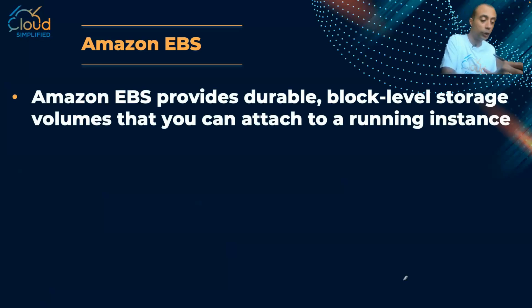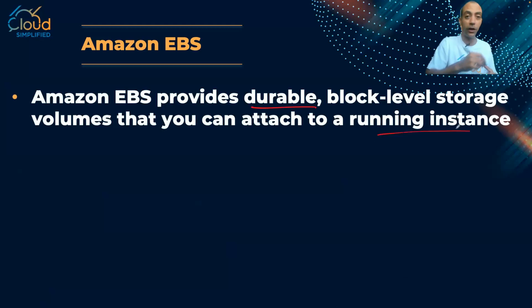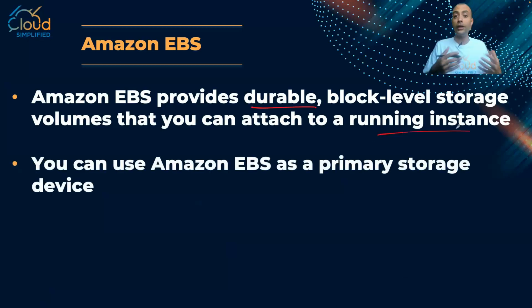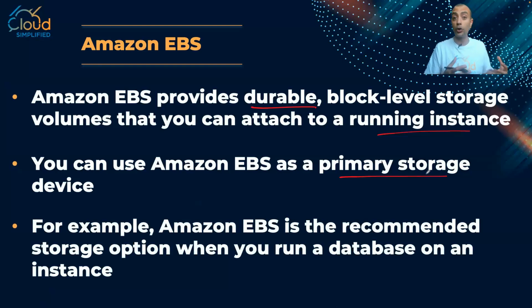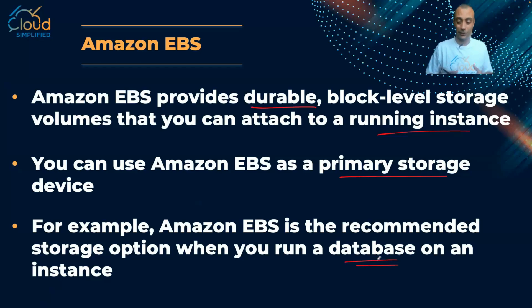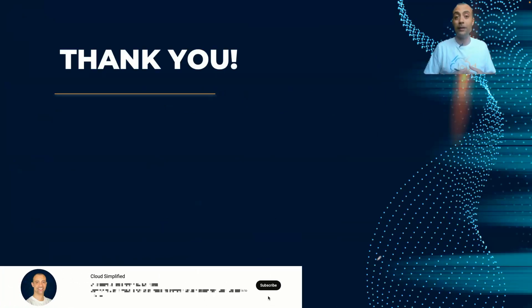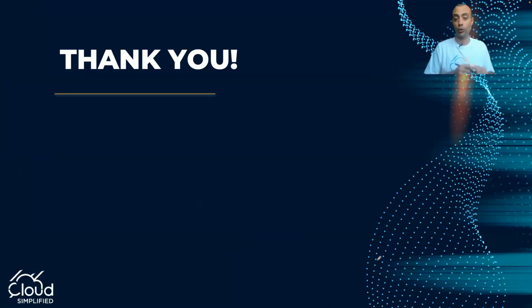EBS provides durable block-level storage volumes that you can attach to your running instance. You can use EBS as your primary storage — this is where you put the operating system of your EC2 instance. EBS is the recommended storage option when running a database, as you want your transactions to remain even if you stop the instance. Thank you for watching and see you in the next lesson.